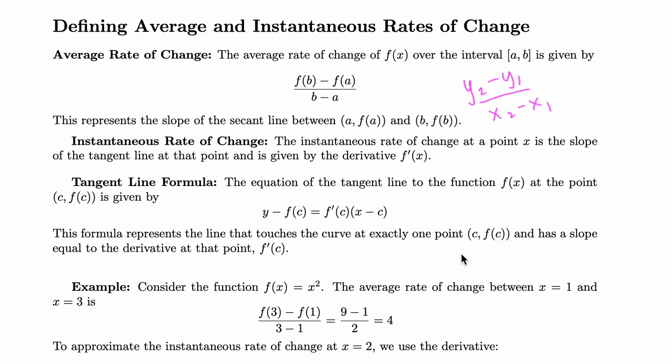Next, instantaneous rate of change. This gives you the slope of the tangent line. Average rate of change gives you the slope of the secant line between two points. So to find the slope of the tangent line, you need to take the derivative and find f prime of x. Tangent line formula is basically just your y minus y1 equals m times x minus x1 formula, again, from your Algebra 1 class. Your slope is the instantaneous rate of change, so it is the derivative at that specific point that you're looking for.